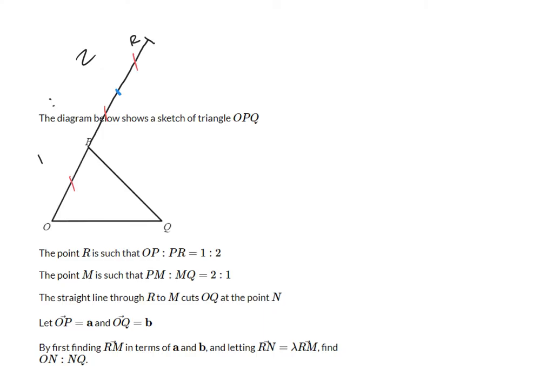I also know that there's a point M, such that P to M and M to Q is a ratio of 2 to 1. So M is on the line P to Q, ratio of 2 to 1, so I'm going to put my M point about here.